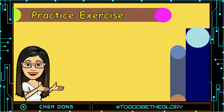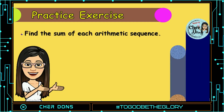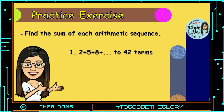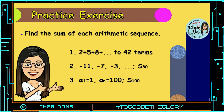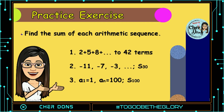It's your time to practice. Find the sum of each arithmetic sequence. Number 1: 2 plus 5 plus 8, up to the 42nd term — solve for S of 42. Number 2: negative 11, negative 7, and negative 3, and so on — find S of 30. And number 3: a sub 1 is equal to 1, a sub n is equal to 100 — solve for S sub 100. Don't forget to comment your answers so we can check them.